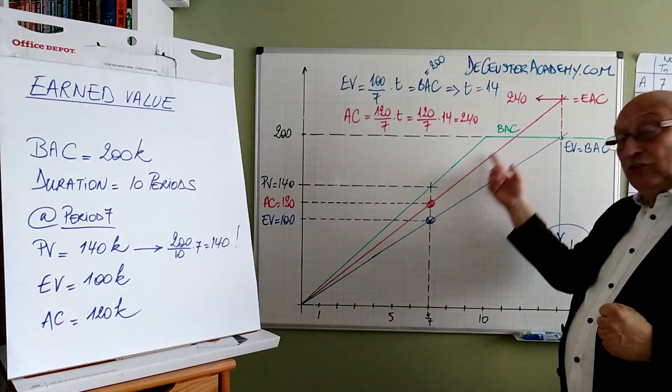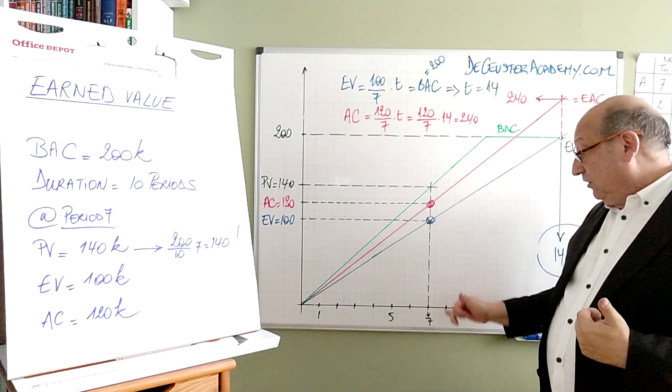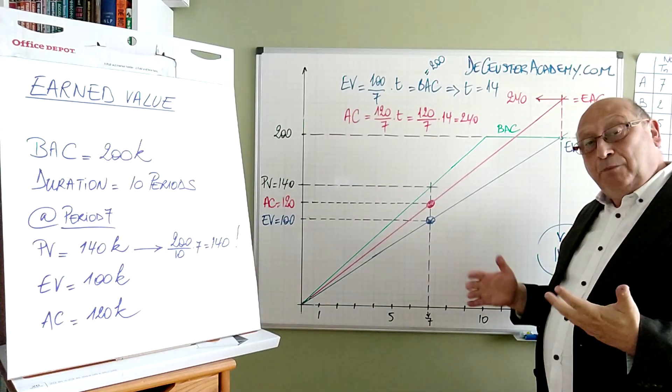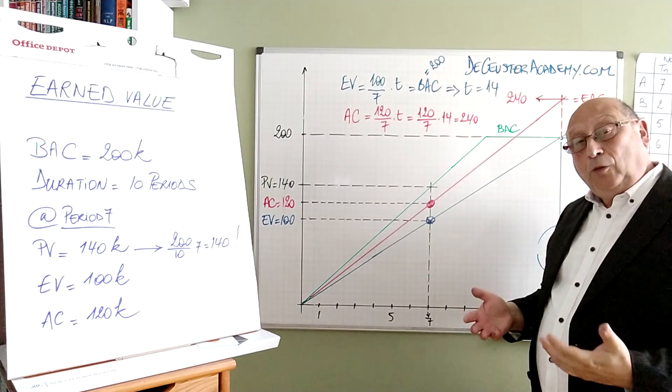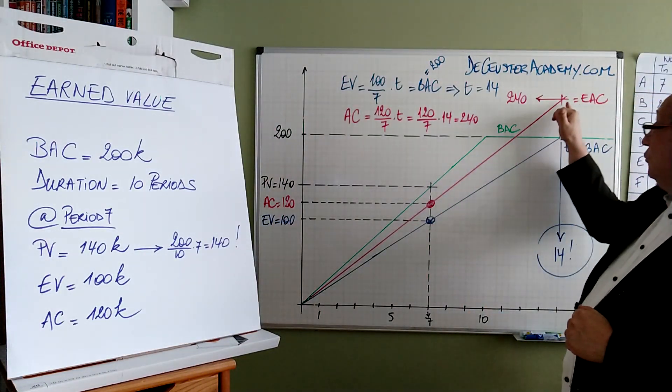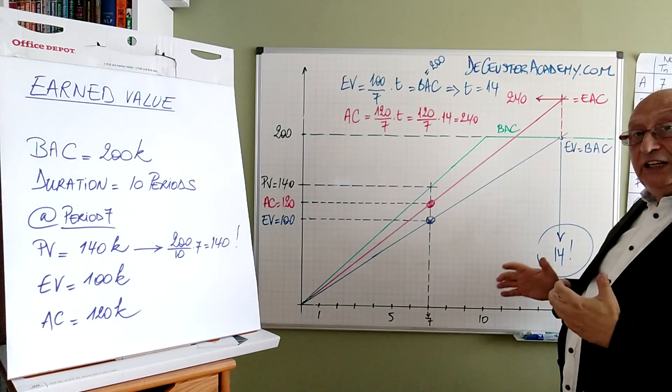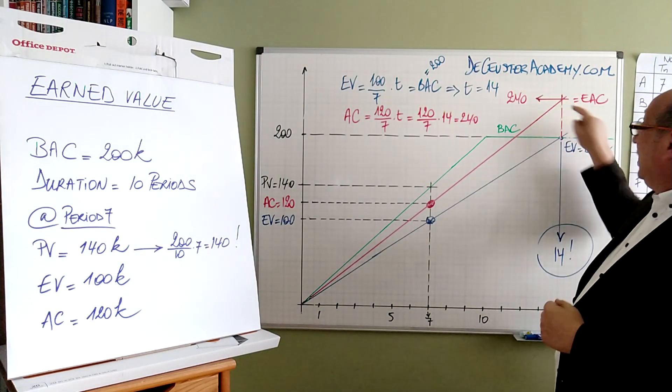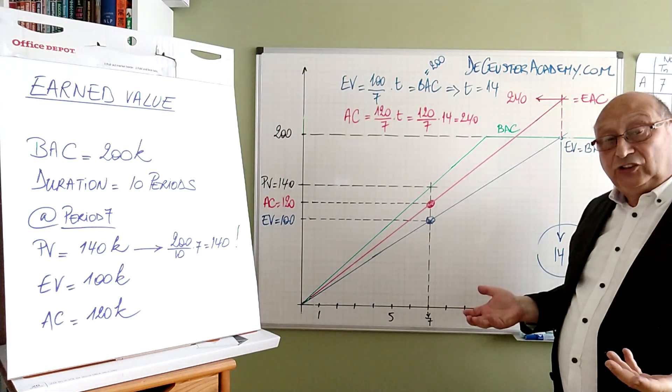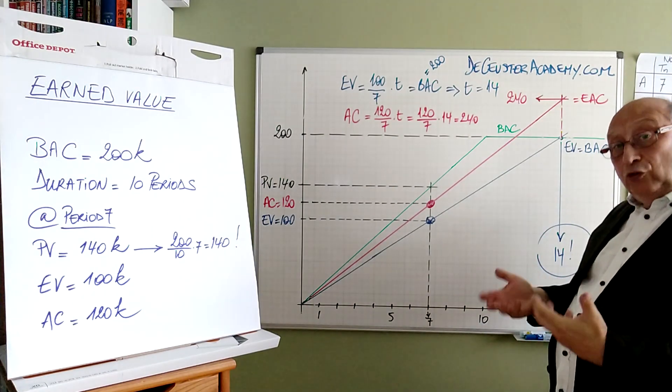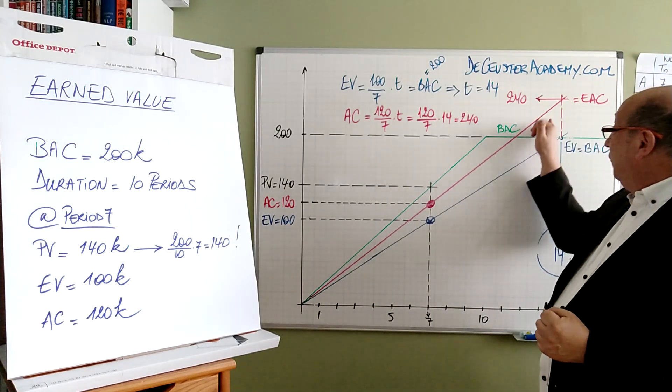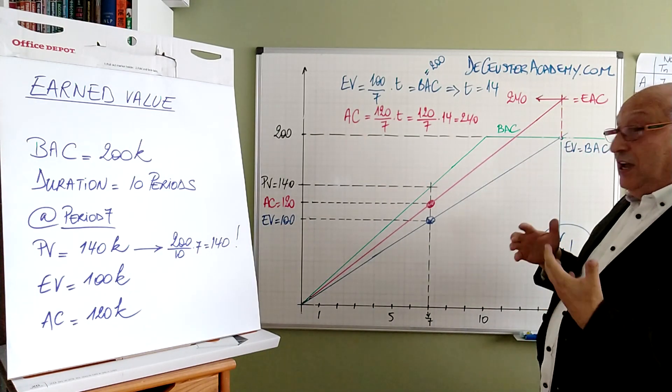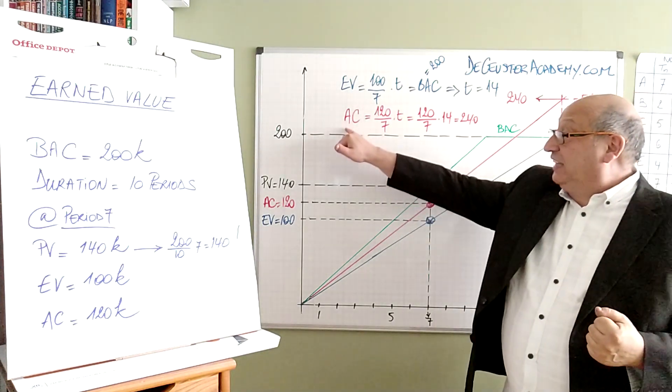Now we apply the same principle to the actual cost. We extrapolate the actual cost starting from period 7. We use the same slope, the same proportion, and we continue working on the project until we reach the 14 periods. So we continue spending money at the same proportion as before. And what we find out is what we can write as an equation.